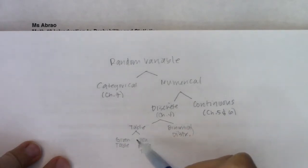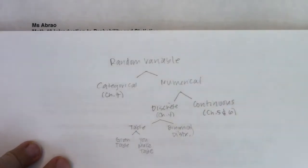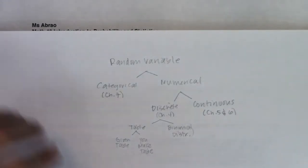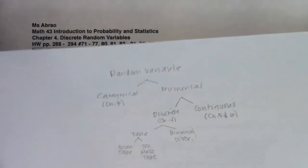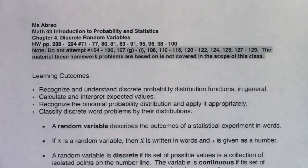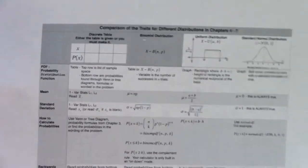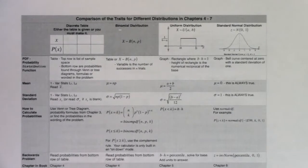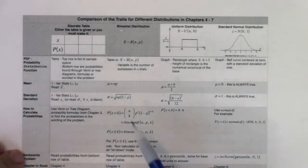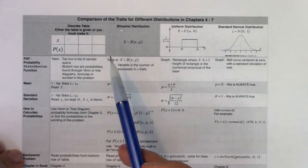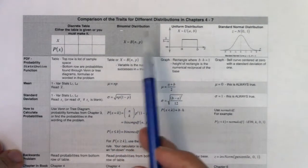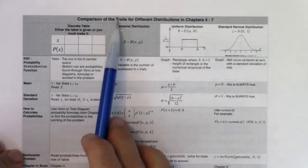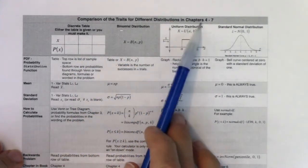There's a bunch of formulas either way. If it's a binomial distribution, we just get a bunch of formulas. I'll show you the breakdowns when we get to chapters 5, 6, and 7. If you're following along with me in chapter 4, you want to make sure that you print this flowchart out. You can find it up on Canvas under the folder called graphic organizers and flowcharts. It's the comparison of the traits for different distributions in chapters 4 through 7.